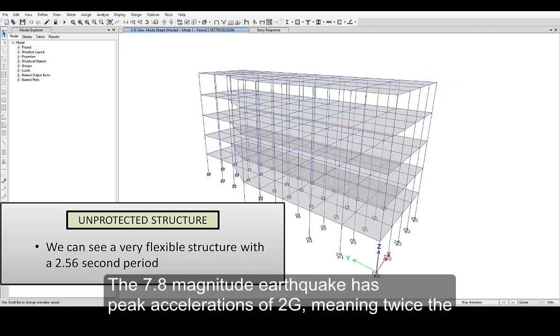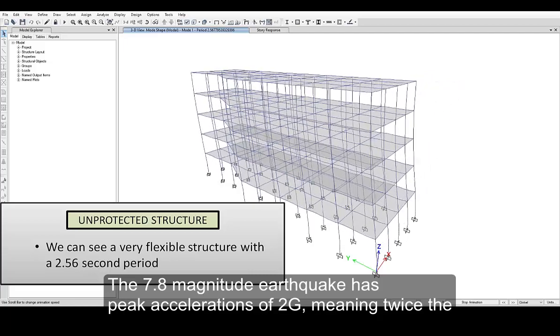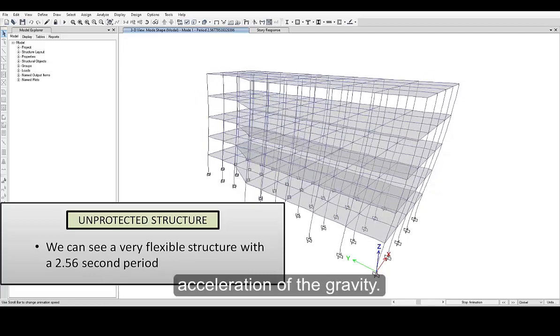The 7.8 magnitude earthquake has peak accelerations of 2G, meaning twice the acceleration of the gravity.